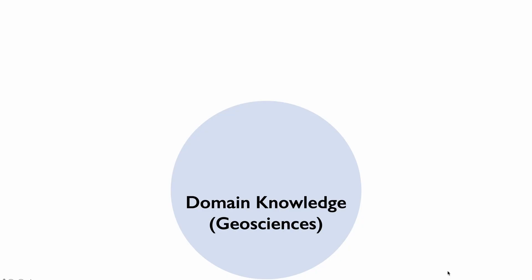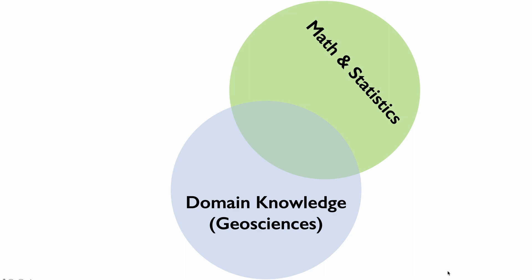You already know about geosciences, you already are geologists, so you already are domain experts. Of course, to this we have to add the skill of math and statistics, because data science and machine learning rely on math and especially statistics. At the intersection of math, statistics, and domain knowledge we have traditional research.